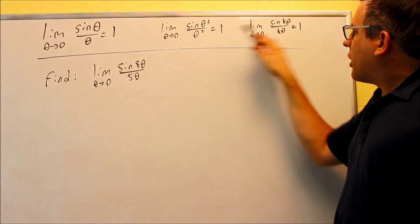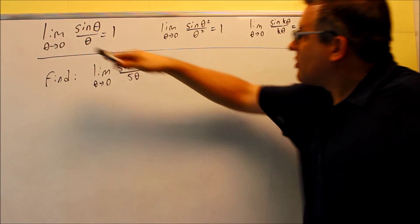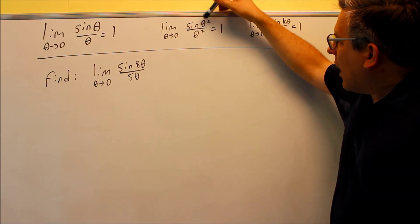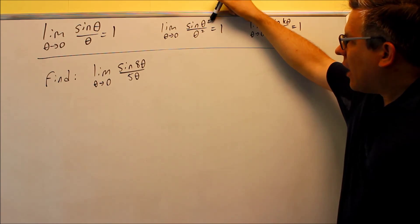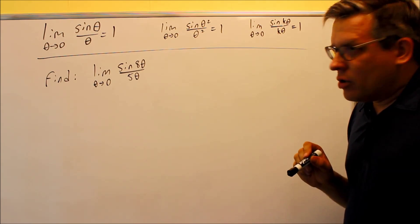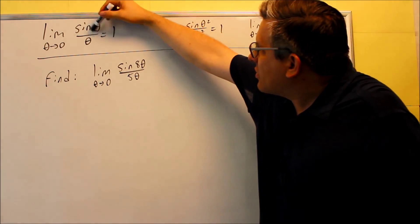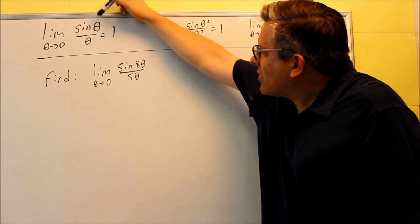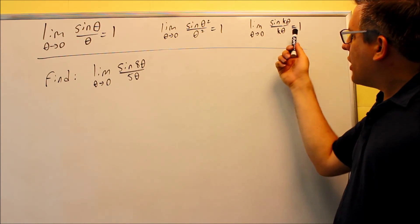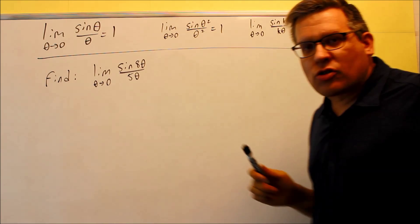These other two are kind of like using properties that are based off of the original one. So for this, if you have powers on top of each one, as long as the power on top matches the power on the bottom, that's going to go to one also. So primarily, whatever you have inside the sine, that's going to be exactly the same on the bottom. As long as it is, it's going to go to one. So both of these are basically using the same principle as the first one.